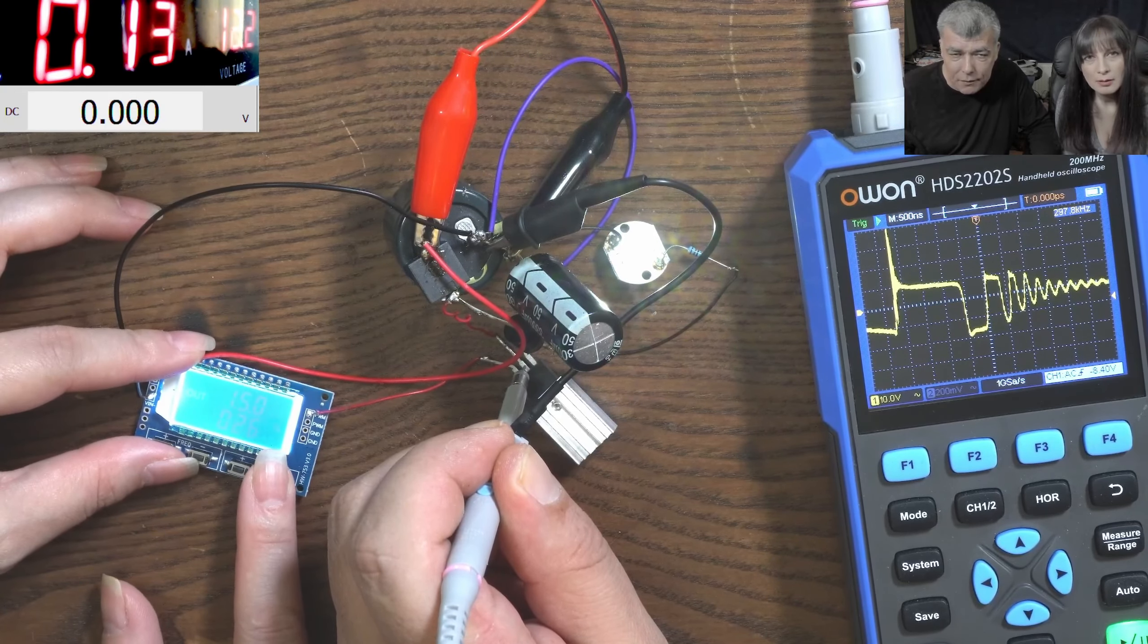So what is the duty cycle right now? It's 26%. Let's check something together. I want to adjust to 100 milliamps. Check the current on the screen and change the duty cycle and make it 100 milliamps.